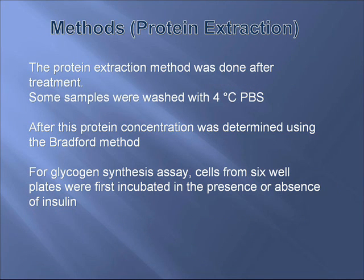For this presentation we'll be looking at two methods. The first is protein extraction. After treatment, cells were washed in serum-free alpha-MEM containing 0.1% BSA and incubated for 15 minutes at 37 degrees Celsius in the presence or absence of insulin. Following this, separate samples of cells in thick well plates were rapidly washed in 4 degrees Celsius PBS and then lysed in extraction buffer.